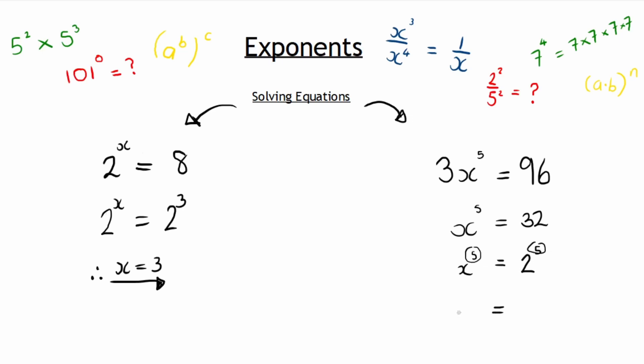And so now where we have the exponents being equal, we can say something about the bases. Similar to what we did in the first example, we can say therefore x is equal to 2. We can say that the bases are the same, and in that way depending on what the situation calls for, where you find your variable, that will determine which method you use.